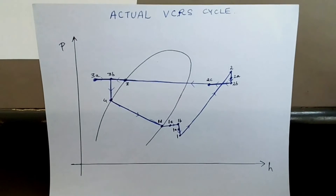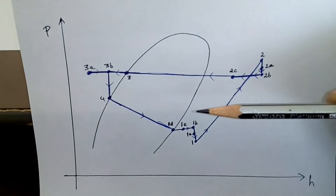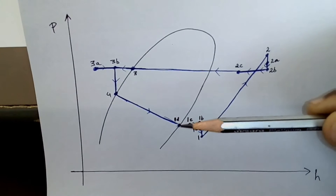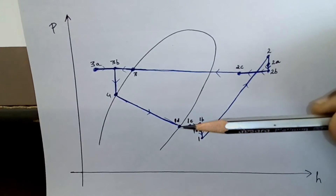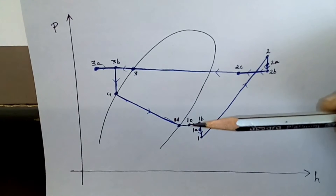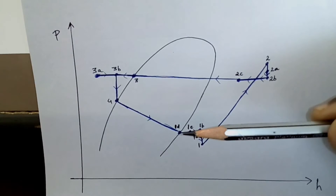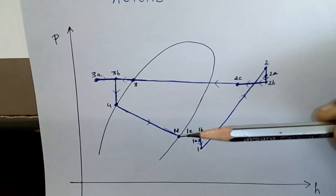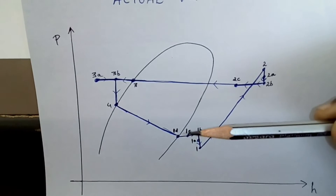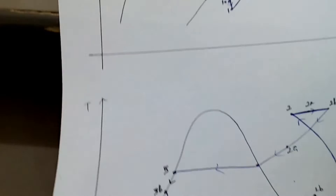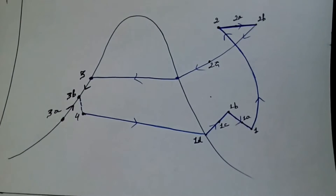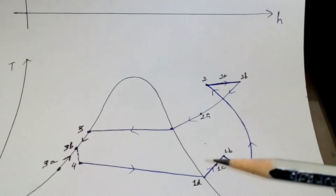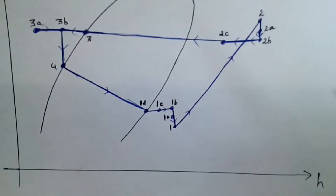Starting with point 1d — this point is on the saturated vapor line. From 1d to 1c there is superheating done. The temperature increases from 1d to 1c.